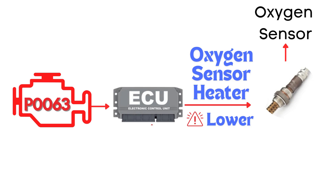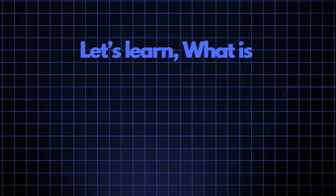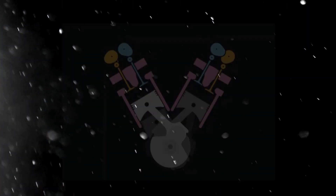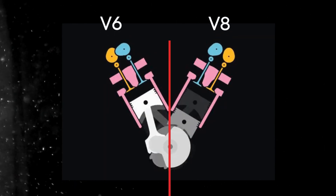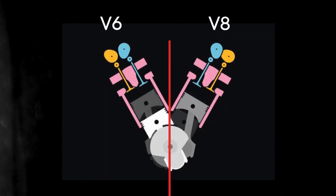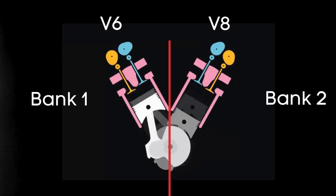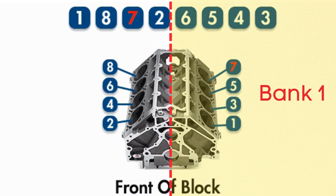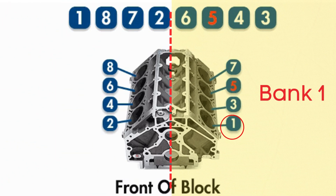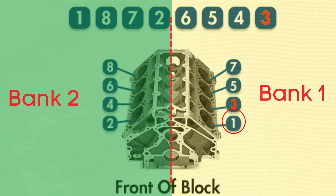Specifically, we're talking about the oxygen sensor heater circuit for bank two, sensor three. In engines with multiple cylinder banks like V6 or V8 engines, you'll have two sides or banks of cylinders. Bank one typically refers to the side of the engine where cylinder one is located, and bank two is on the opposite side.